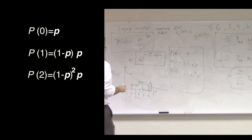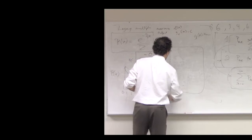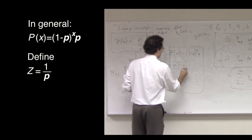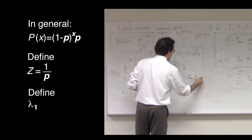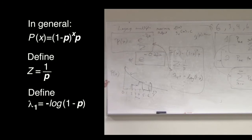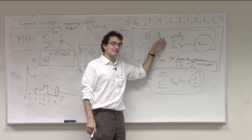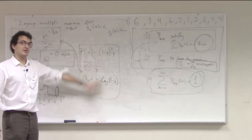And of course, you can map this model here, which in general looks like P of X equals one minus P to the X times P. And if I define Z as one over P, and I define lambda one as negative log one minus P, then I have an exact correspondence between these two models. So, what we've just shown is that the maximum entropy model, where the waiting time is constrained on average to be a particular value, but the system is otherwise completely uncertain, is equivalent to a sort of random raindrop taxi cab arrival model.